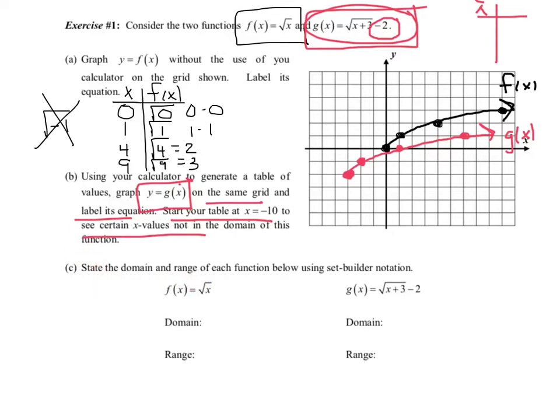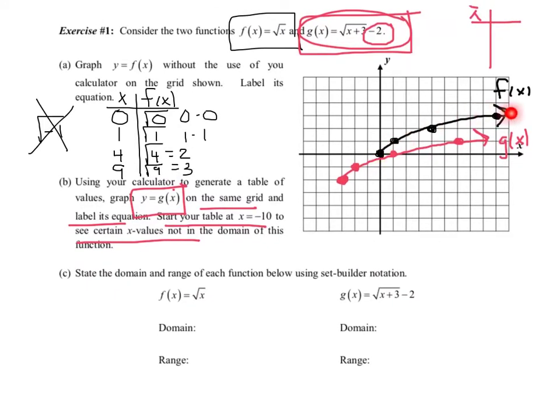Part C says state the domain and range of each function using set builder notation. So let's start with the black graph and talk about its domain. Remember, I'm looking at my x values. And I just want to stress when we say domain, it's always min, max. Smallest to largest. So when I look at these x values, the smallest x value is 0, and it goes on forever. So I would say from 0 to forever. So one way to represent that in set builder notation is to say all the x values are greater than or equal to 0. Now, notice I use equal to because I have a nice solid point there from my table.